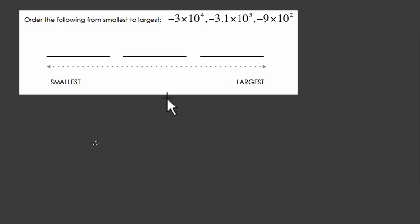Let's read this problem together. They want us to order the numbers from smallest to largest. You might notice right away we've got negative 3 times 10 to the 4th, negative 3.1 times 10 to the 3rd, and negative 9 times 10 squared. So we've got three negative numbers.